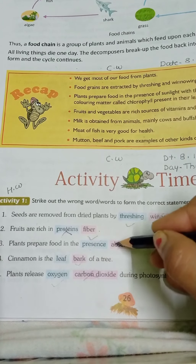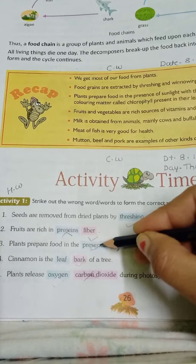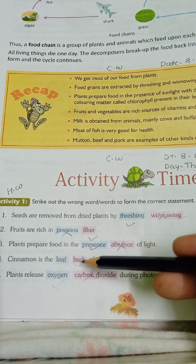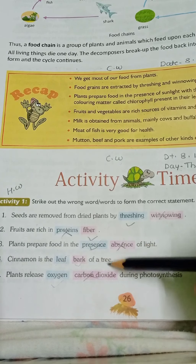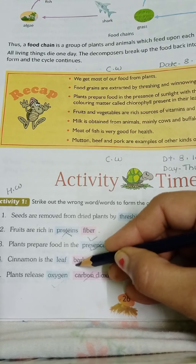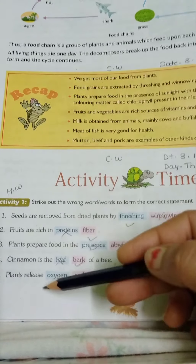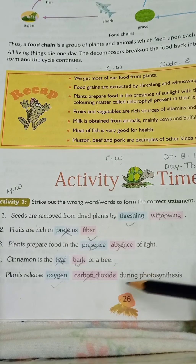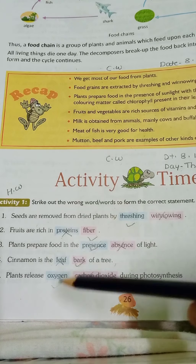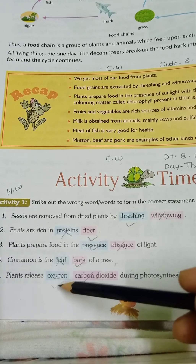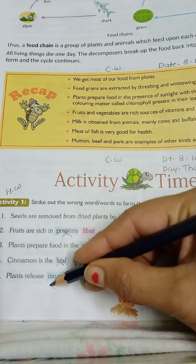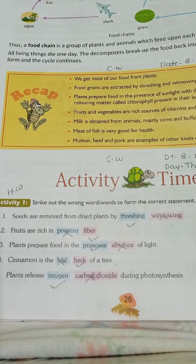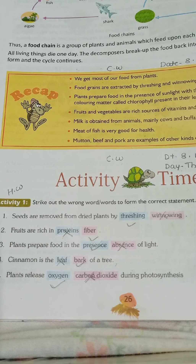Plants prepare food in the presence of light — cross out absence and tick presence — with the help of green coloring matter called chlorophyll. Cinnamon is the bark of a tree, so cross out leaf. Plants release oxygen during photosynthesis — cross out carbon dioxide — and all living things take oxygen for breathing.